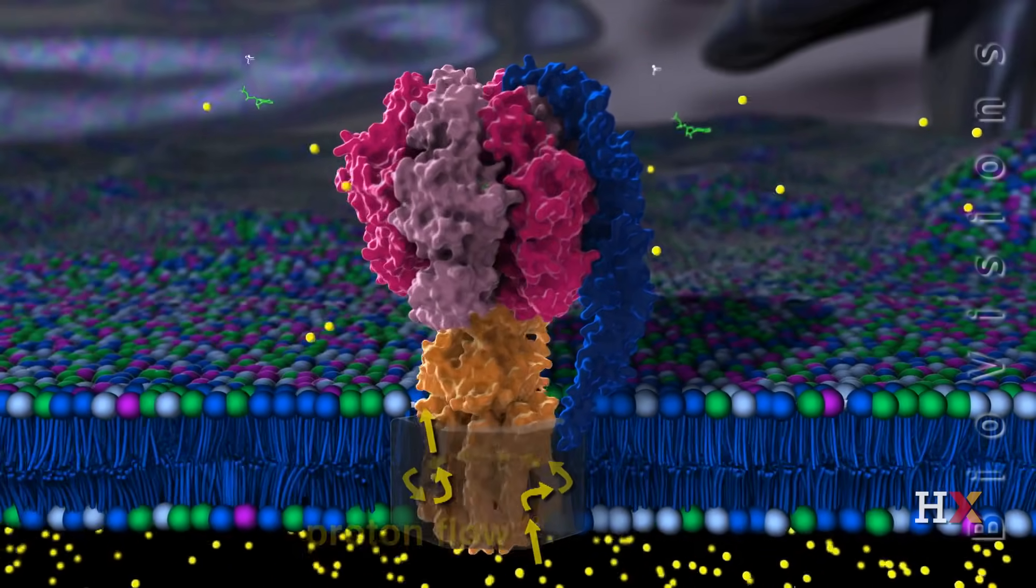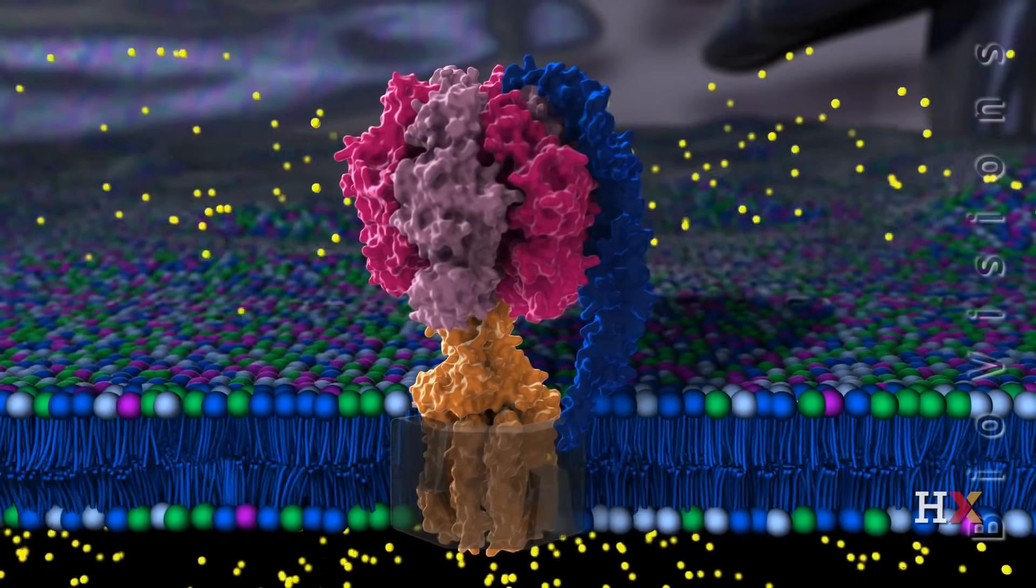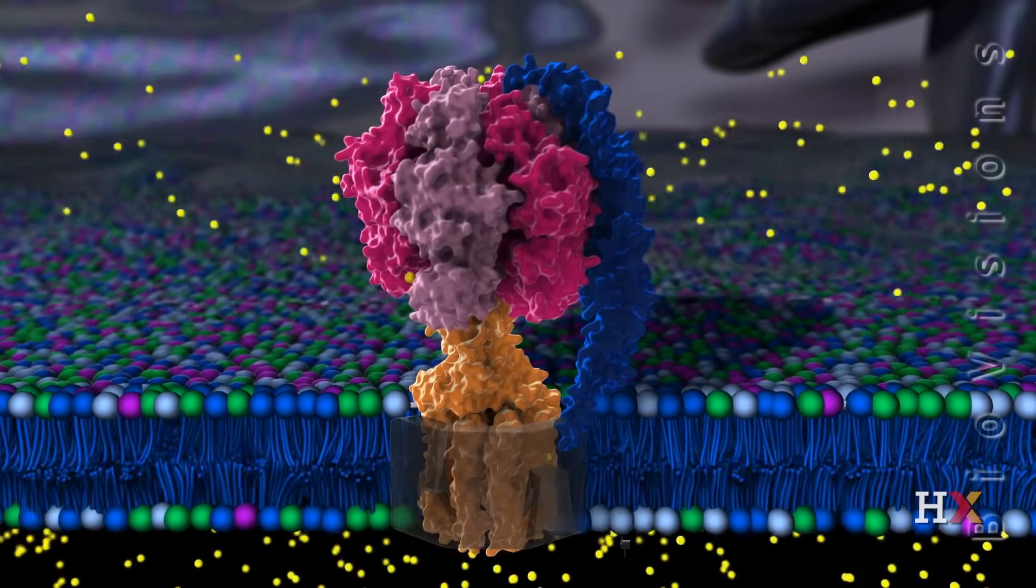If there is no proton gradient, synthase subunits stop rotating and the cell can quickly become starved of energy and die.